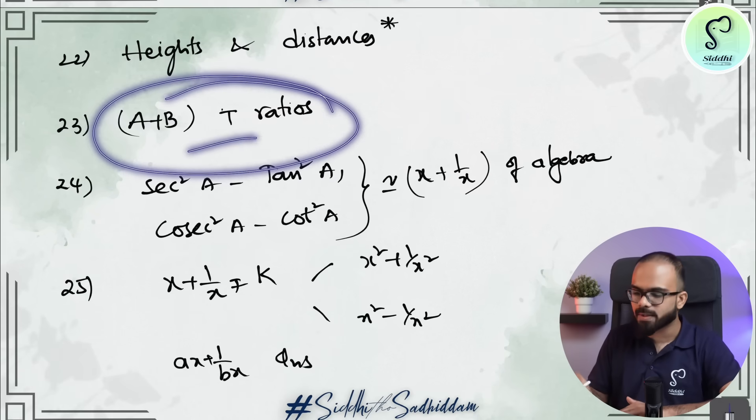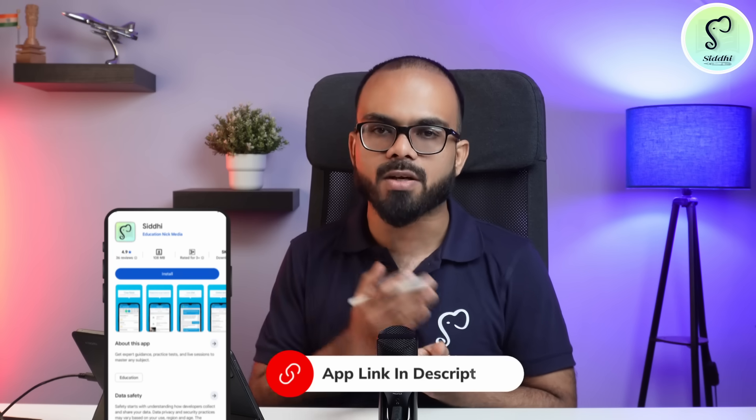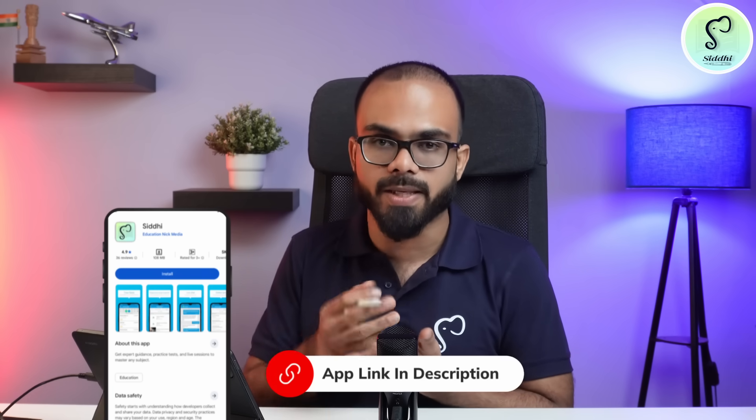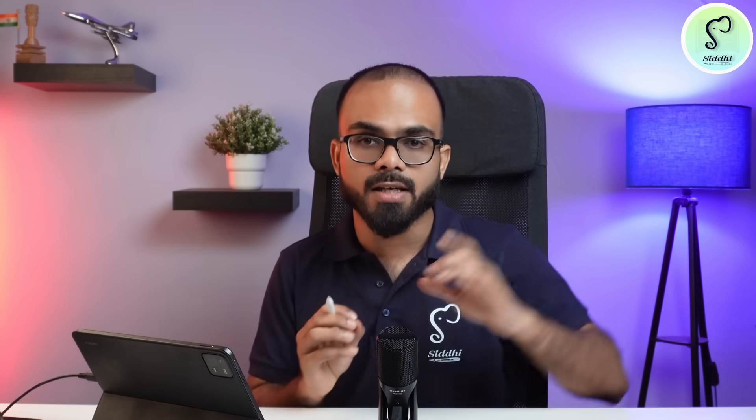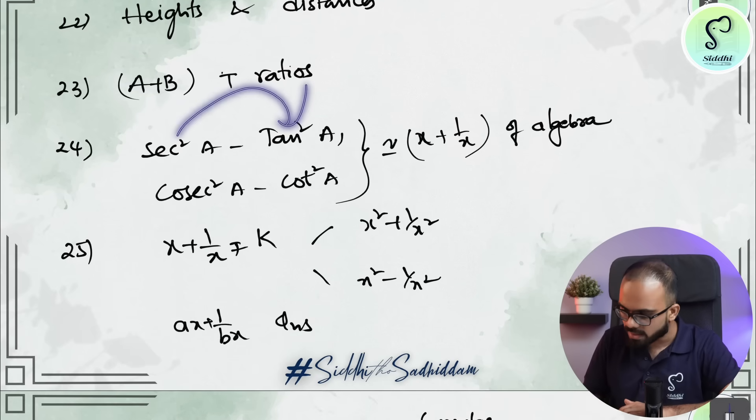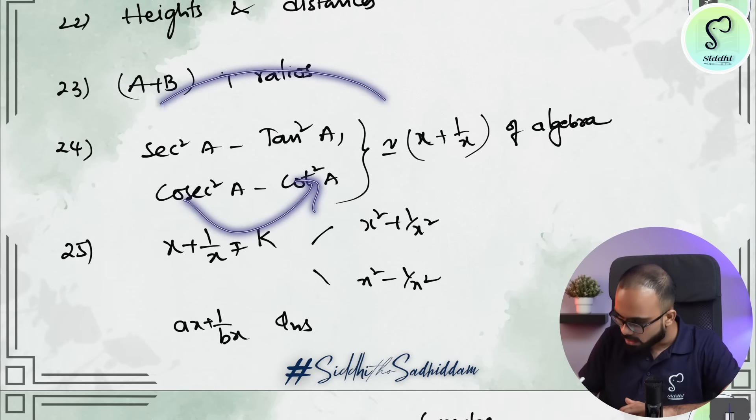Then A plus B based trigonometric ratios that is sine of A plus B, cos of A plus B, tan of A plus B is very useful and it is very important. Then the questions on secant square A minus tan square A, cosecant square A minus cot square A.